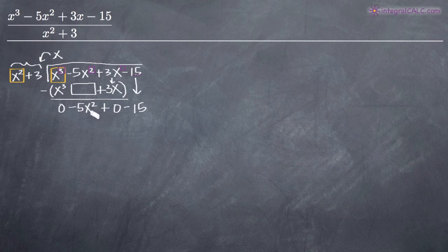So now we need to figure out what to multiply by x squared in order to get the result negative 5x squared. Well, that's just going to be a negative 5. So we go ahead and say minus 5. Now we have to multiply the negative 5 throughout x squared plus 3.